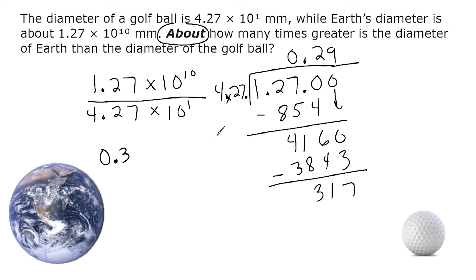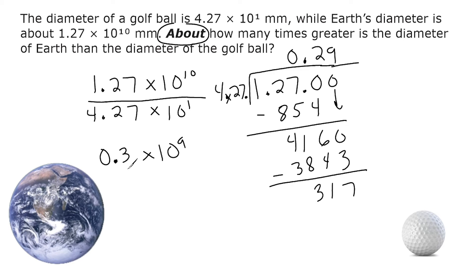Rounding the coefficient to the nearest tenth gives us 0.3. Now we divide our base tens: when dividing bases that are the same, the laws of exponents say you subtract their exponents. We subtract the bottom exponent from the top: 10 minus 1, which gives us 10 to the ninth power. So we have 0.3 times 10 to the ninth power, but this isn't quite in scientific notation.